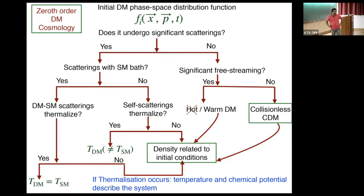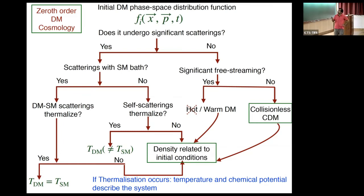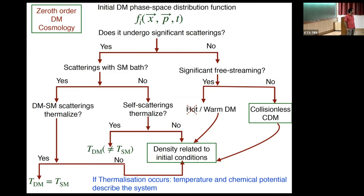This is the zeroth-order dark matter cosmology in one slide. There is an initial dark matter phase space distribution function specified by whatever mechanism populates the initial dark matter density. Given this initial phase space distribution function, the first question to ask is whether dark matter undergoes any significant scatterings. If no, the next question is whether it has any significant free-streaming. If again no, we land in the cold, collisionless dark matter paradigm — the C in the Lambda CDM model — and the density is related to the initial conditions.